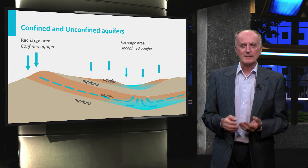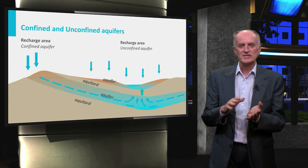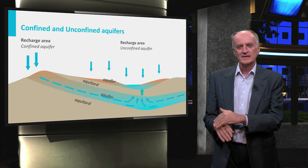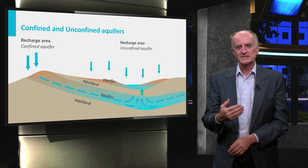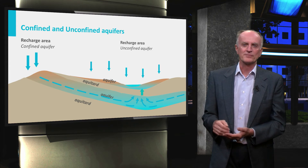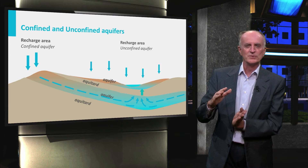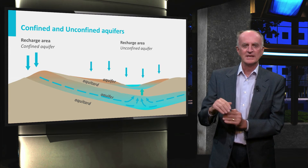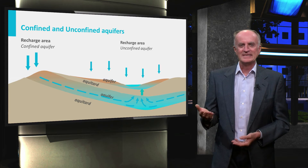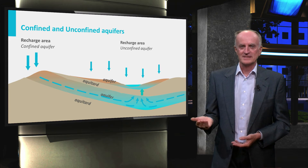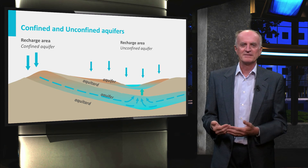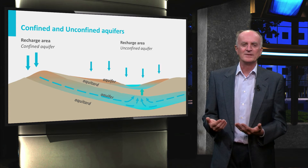If in the recharge area permeable layers are found which dip steeper than the topography and therefore continue deep in the subsurface, the waters will flow along these layers forming confined aquifers. Differently from unconfined aquifers, they are bounded by two low-permeability formations and are fully saturated with water. Confined aquifers are deeper and more difficult to access, but have major advantages: they are protected from negative effects from the surface and typically have clean waters.